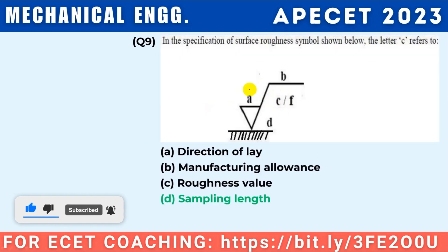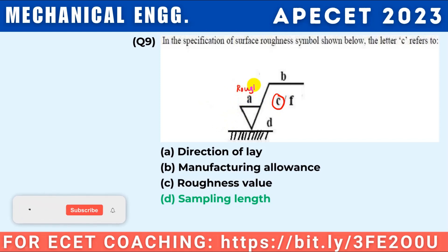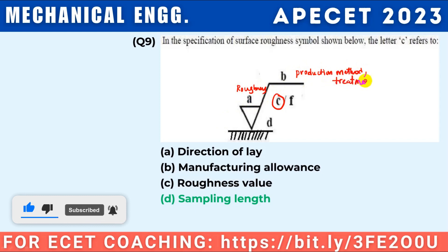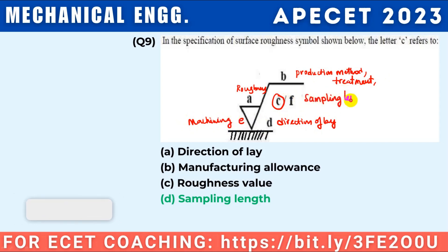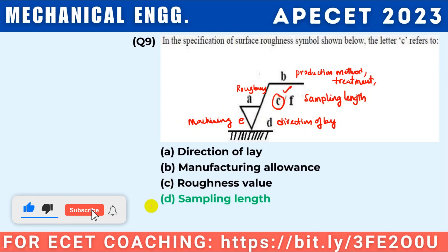In the specification of the surface roughness symbol shown, the letter A represents the roughness value, B is the production method or treatment/coating, C is the sampling length — this is a very important point — D is the direction of lay, and E is the machining allowance.